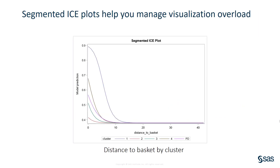Traditional ICE plots display one curve for each observation in the training set, which is too many curves for even a data set of moderate size. But you can manage the number of curves and limit visual overload by sampling individuals or clustering the curves. Here is a segmented ICE plot for distance to basket for a neural network model. Unlike a traditional ICE plot, in a segmented plot each curve represents a cluster of ICE curves that have a similar shape. Because you're plotting cluster centroids rather than every curve, the number of curves is greatly reduced, making the plot easier to understand.